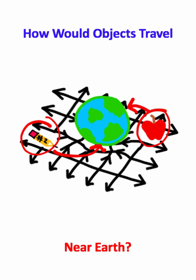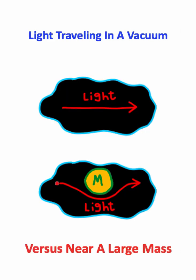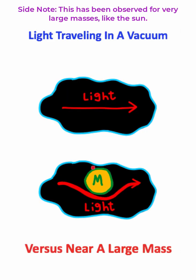This concept gets much more complicated, though, when you factor in light, because light will actually bend in the presence of a large mass due to spacetime curvature.